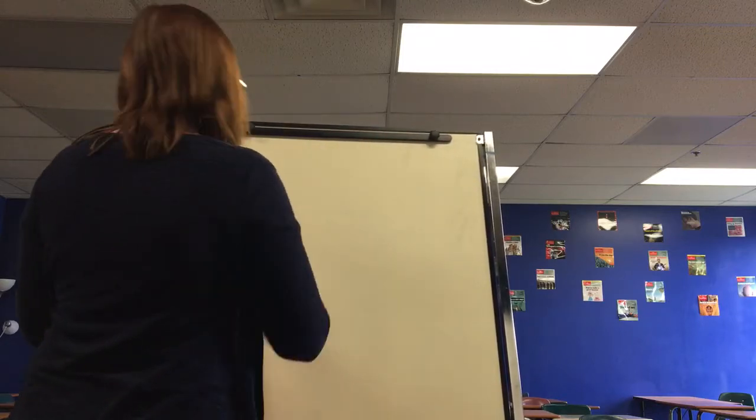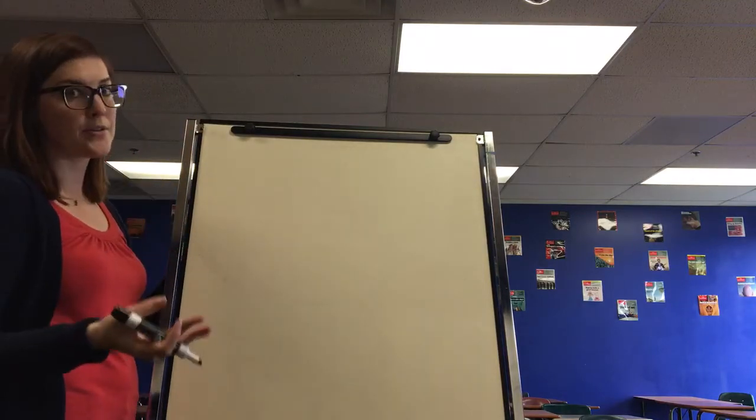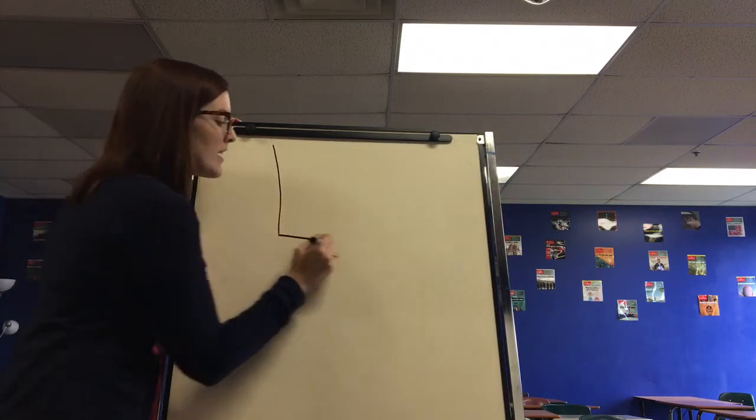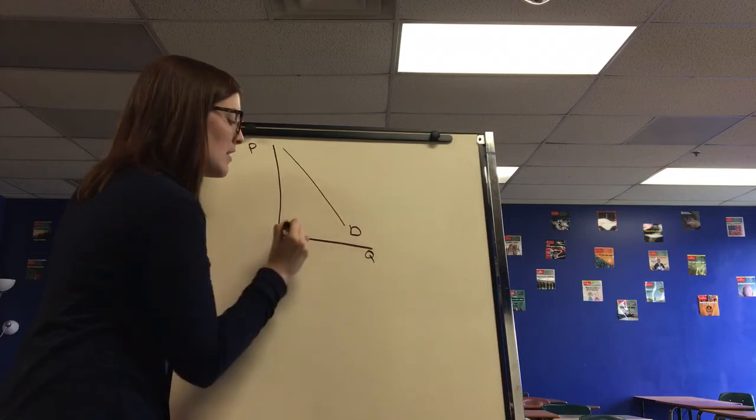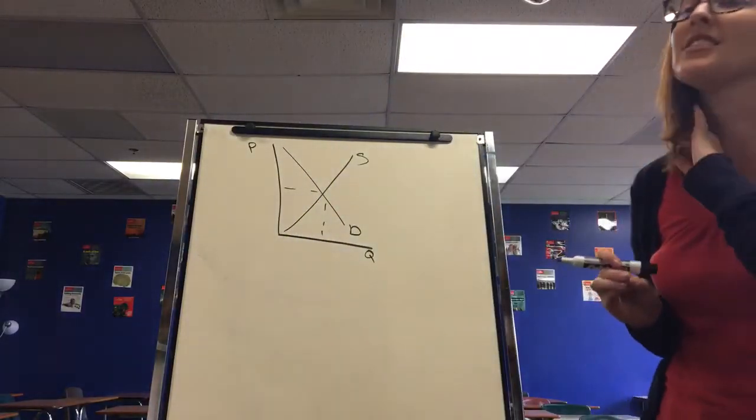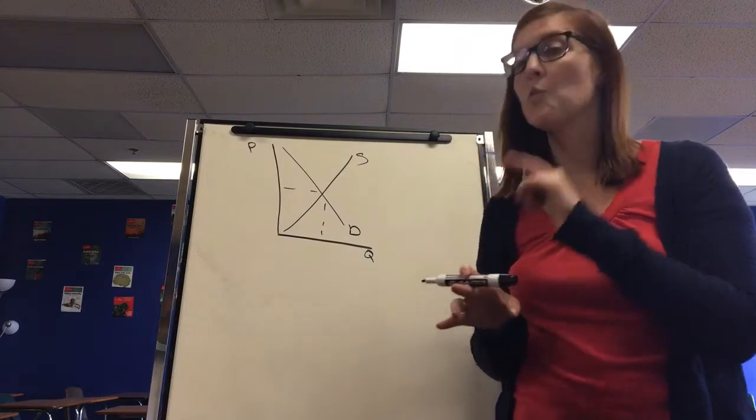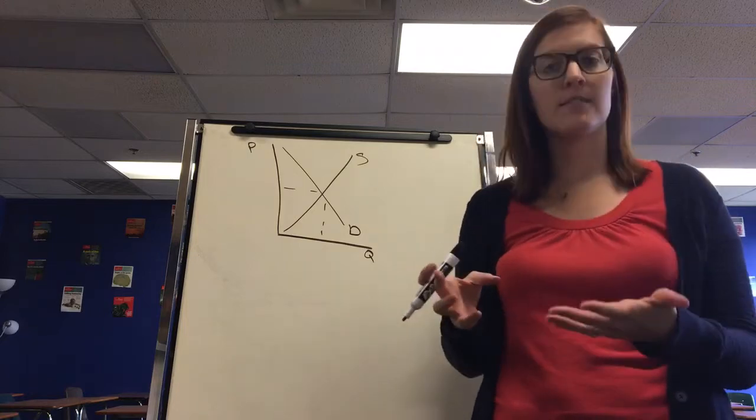The next thing we're going to look at is supply and demand. Now supply and demand isn't as heavy on the macro test as it is on the micro and we really focus more on aggregate models, but there are some things you still need to know from this graph for the AP exam. The first thing, because this applies in the aggregate model as well: price does not change demand and price does not change supply ever. It always changes the quantity - quantity demanded and quantity supplied. This is explained by the law of demand and the law of supply.